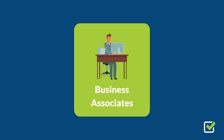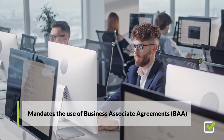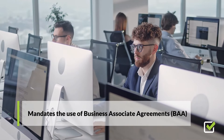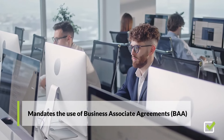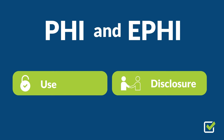The Omnibus Rule outlines the responsibilities of business associates and mandates the use of business associate agreements, or BAAs. These contracts detail the narrow and specific use and transfer of PHI and ePHI.